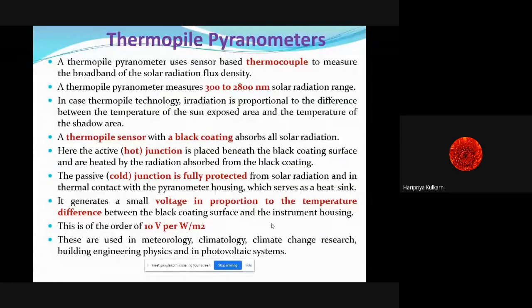In short, thermopile pyranometers make use of a thermocouple. It measures the radiation range from 300 to 2800 nanometers. It is coated with a black color so that it will absorb maximum solar radiations. There is a hot junction and cold junction. The cold junction is fully protected so that we get the correct, precise temperature difference value and can measure solar radiations accurately.